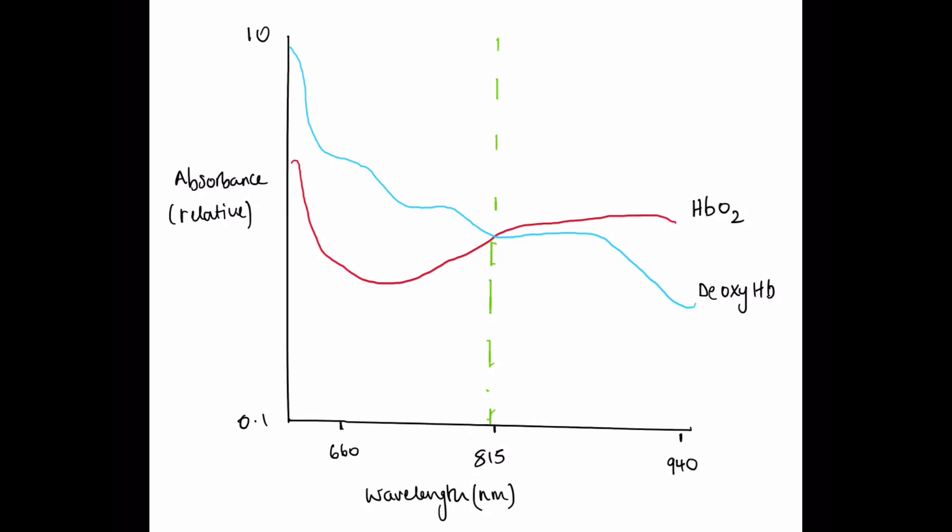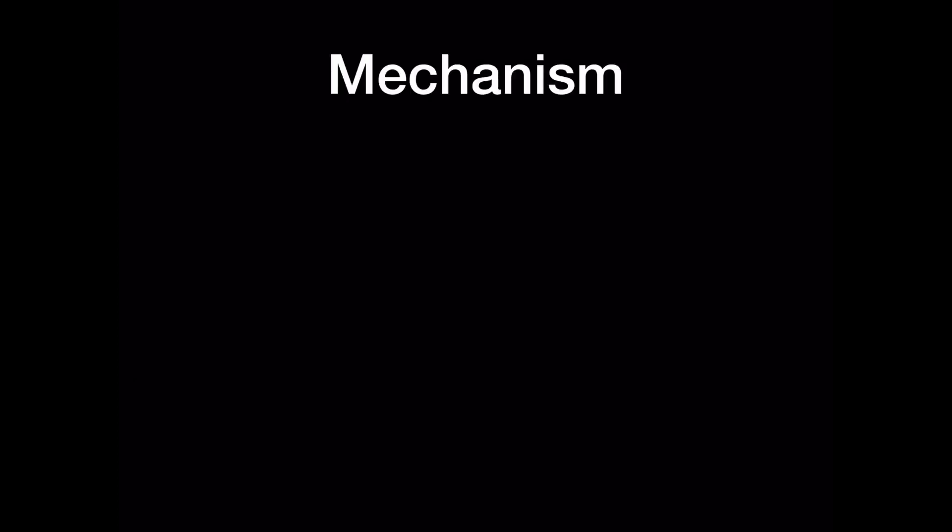What we can see is that deoxygenated hemoglobin absorbs more red light and oxygenated hemoglobin absorbs more infrared light. There is an isobestic point at around 815 nanometers and this represents the point at which both types of hemoglobin absorb the same amount of light.